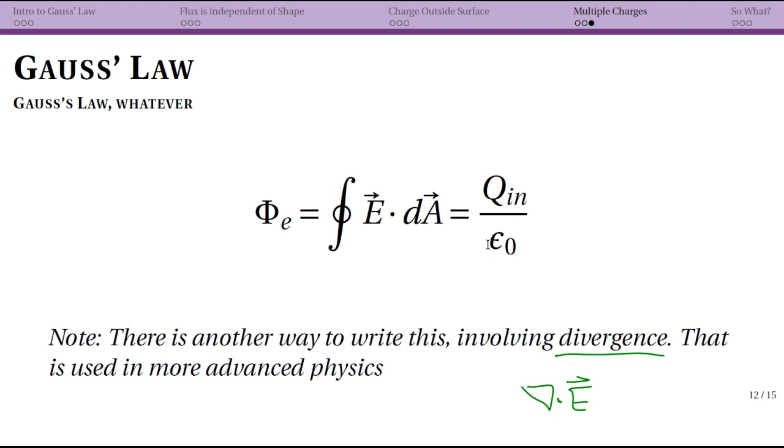This other way to write Gauss's law is used in more advanced physics. When we write Maxwell's equations, as I've mentioned before, Gauss's law appears there. There's an integral form and then there's what I would call a derivative form. Recognize that if you just start googling Gauss's law, you're going to see some stuff that looks very different than this.